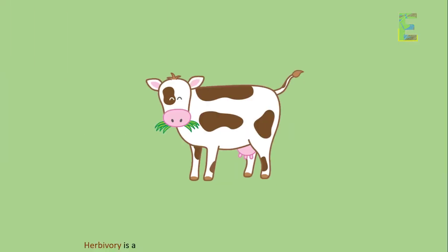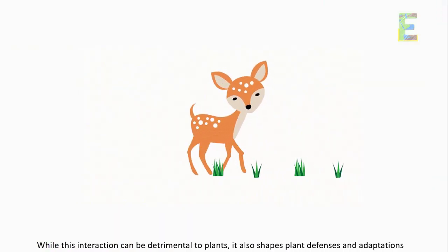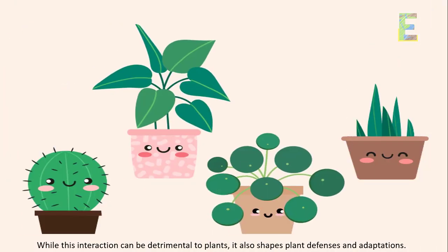Herbivory. Herbivory is a specific form of predation where herbivores feed on plants. While this interaction can be detrimental to plants, it also shapes plant defenses and adaptations.